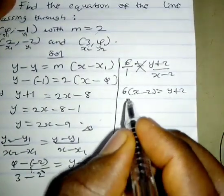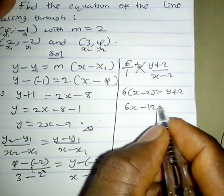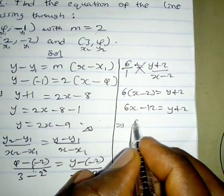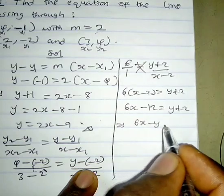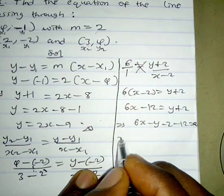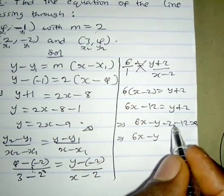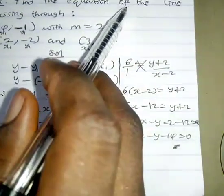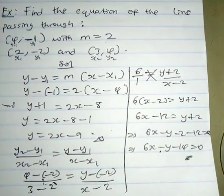Opening the bracket gives 6x minus 12 equals y plus 2. Rearranging: 6x minus y minus 2 minus 12 equals 0, so we have 6x minus y minus 14 equals 0. The equation of the straight line passing through these two points is 6x minus y minus 14 equals 0. Thanks for watching.